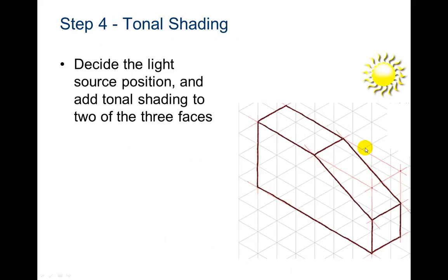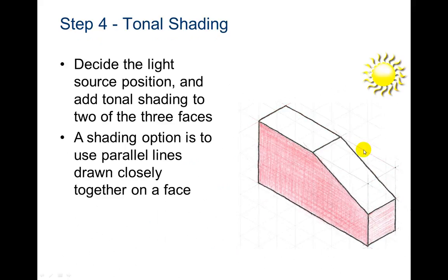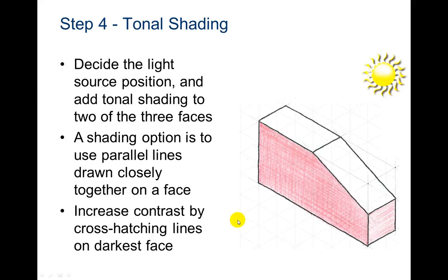You're going to decide the light source position and add tonal shading to two of the three faces. Any of the faces going this direction is going to have that horizontal and vertical lines. And then the other one, notice how there are two different types of shading here to show that they're facing different directions. A shading option is to use parallel lines drawn closely together on the face. And then you can increase that contrast by doing cross-hatching lines to make one of the faces darker. Vertical and horizontal, horizontal vertical, and then this one would just be horizontal.